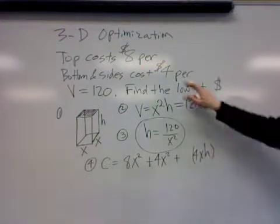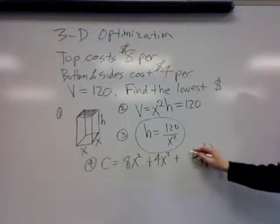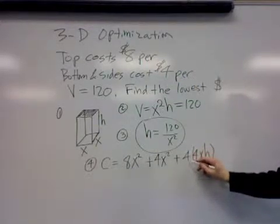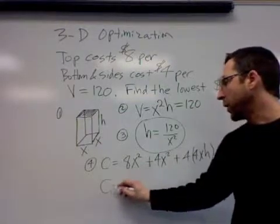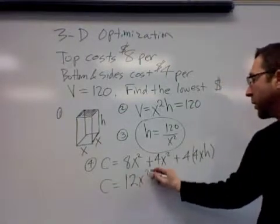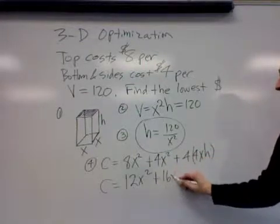We've got four sides also. Each side has an area of x times h, so we've got four xh's for all four sides, and the cost is four dollars per square inch. So it's four dollars times the amount of area that the sides make up. What you'd want to do here is simplify—you get twelve x squared and sixteen xh.